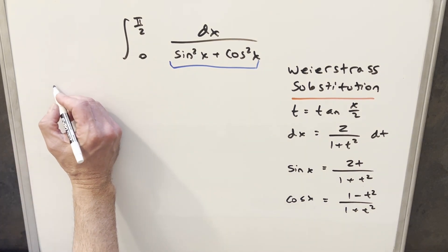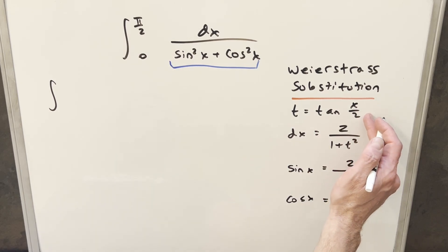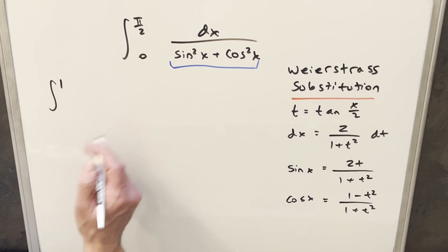So let's just go ahead with this substitution first. Let's update our bounds. We plug π over 2 in here for x. We're looking for tan of x over 4. Tan of π/8 is just 1. Then we plug 0 in here. Tan at 0 is going to give me 0. So our bounds are going from 0 to 1.